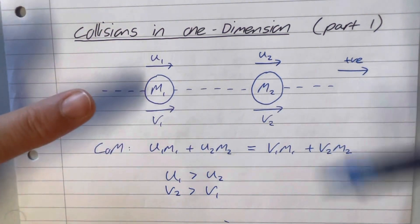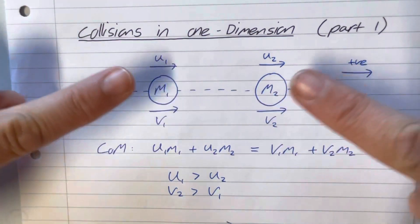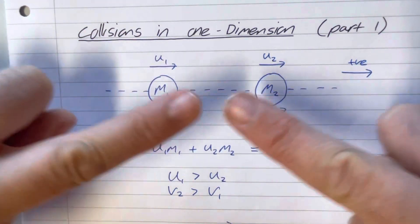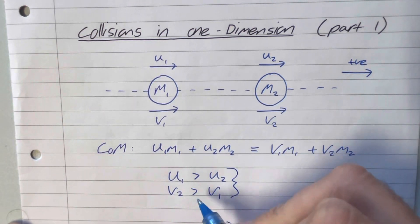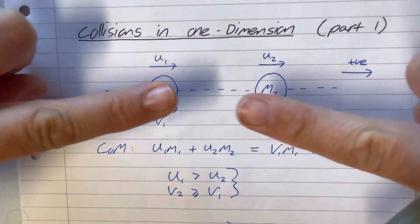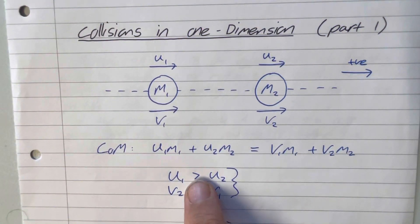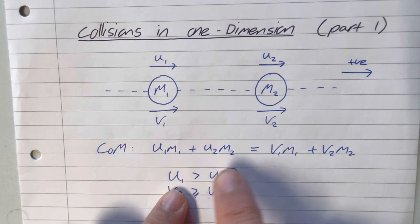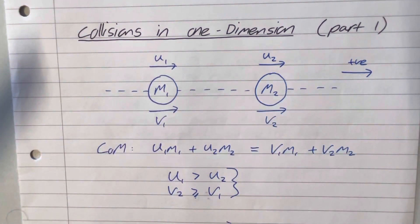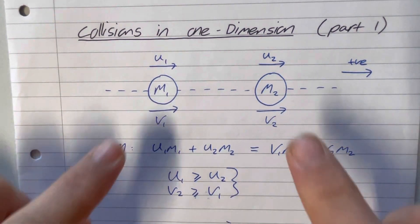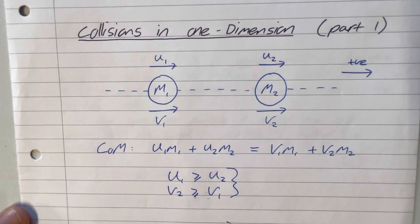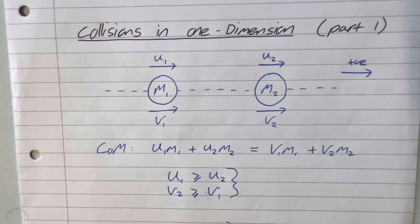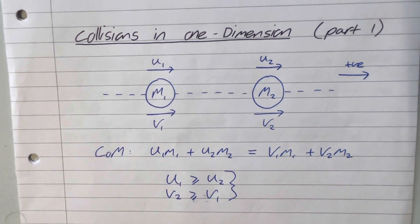They can move in either direction but they can't go through each other - that's not allowed. It could be equal to if they coalesce and move off with the same velocity. It can also be equal to if you have an object which starts together and then blows apart - I've seen firework questions like that. So U1 cannot be less than U2 and V1 cannot be greater than V2.